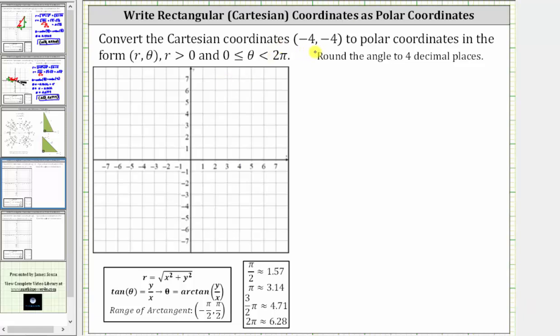We're asked to convert the Cartesian coordinates negative four comma negative four to polar coordinates in the form r comma theta, where r is greater than zero